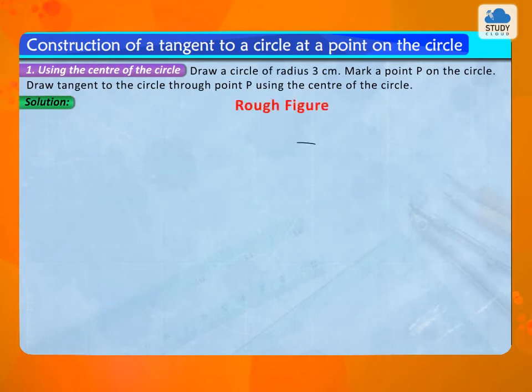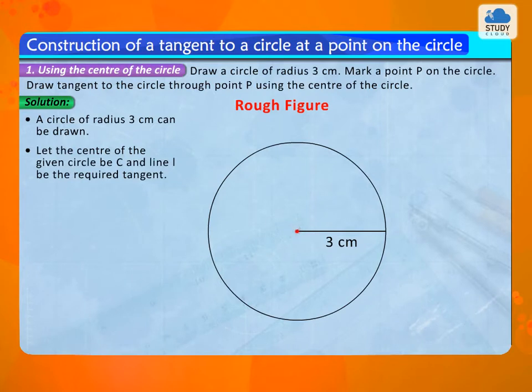Solution: A circle of radius 3 cm can be drawn. Let the center of the given circle be C and line L be the required tangent.